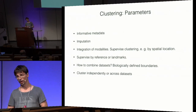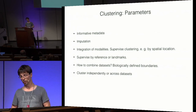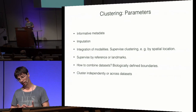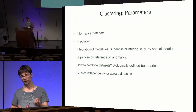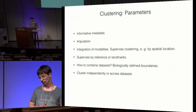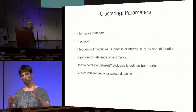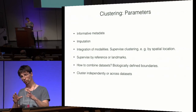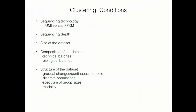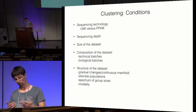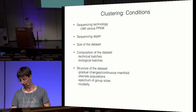We also need to decide how to combine data sets across a hierarchy of cell types. Clustering all cell types in the human body in one go is probably not reasonable — we should partition data along biologically defined boundaries and increase resolution to find novel information. This is analogous to looking at a map at the level of continents, then countries, then villages. Conditions to test include sequencing technologies, variation in sequencing depth, data set size, technical and biological batches, and the structure of the data — gradual versus discrete changes.